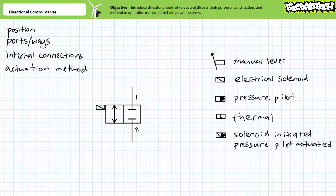Once we examine the cutaway of a directional control valve, I'll come back and explain how check valves and flow control valves internal to a position box work. Each valve position performs a specific function. This position closes the path from one to two and fluid cannot flow. This position opens a bidirectional path from one to two through which fluid can flow. Shifting a valve from position to position is the act of moving internal components like poppets, sliding plates, or spools to selectively connect or disconnect ports via the internal passageways machined into the valve body.